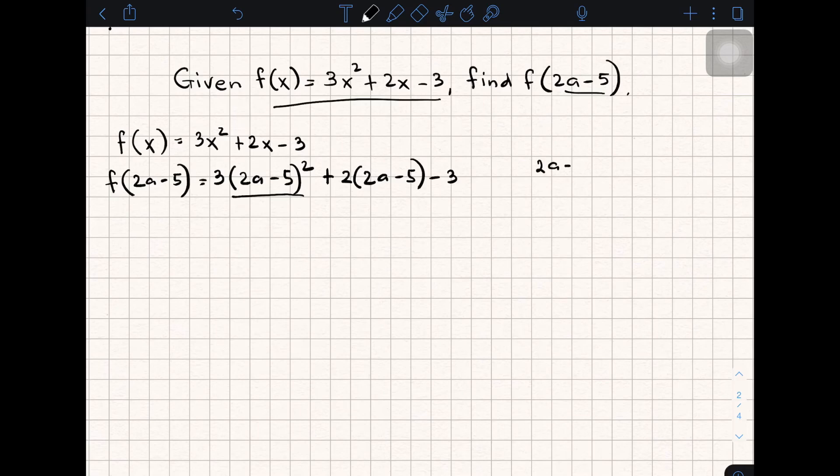We have 4a². And then to get the second term, just multiply 2a and -5. That will give you -10a, and then times 2, that is -20a. And then square of binomial, that will give you plus 25.